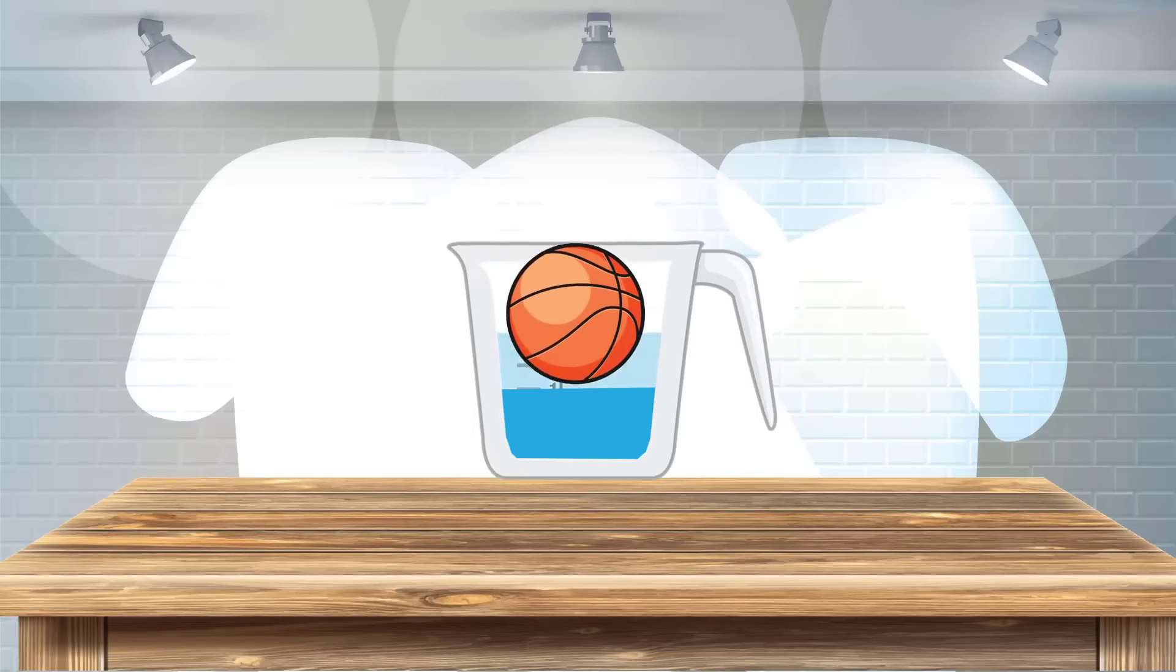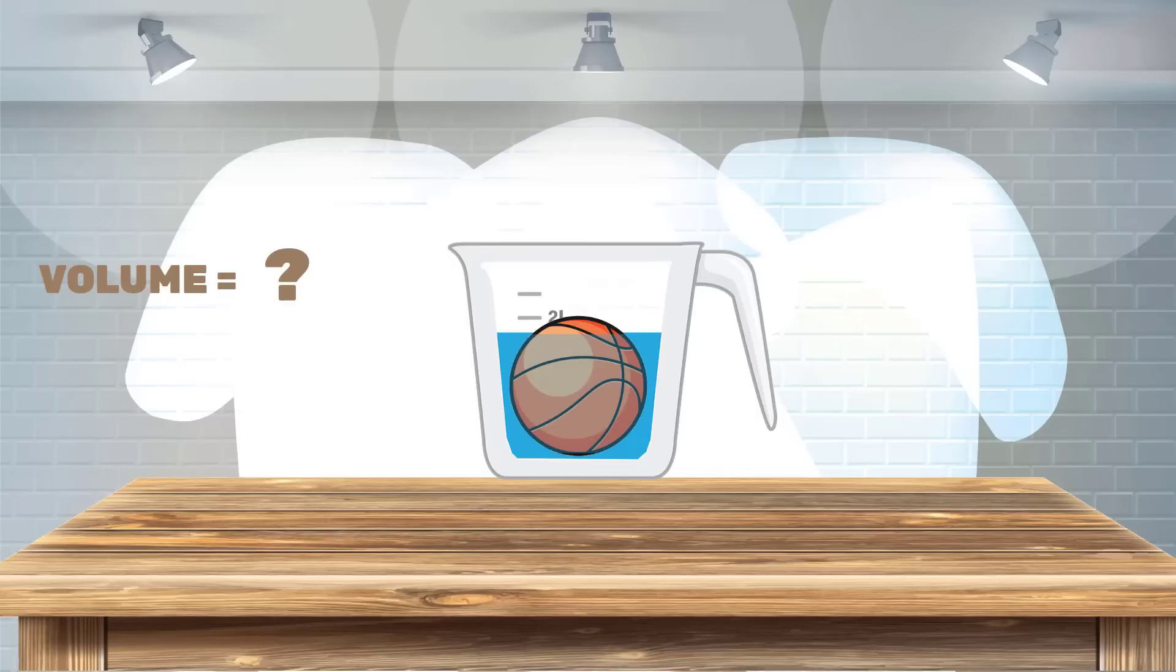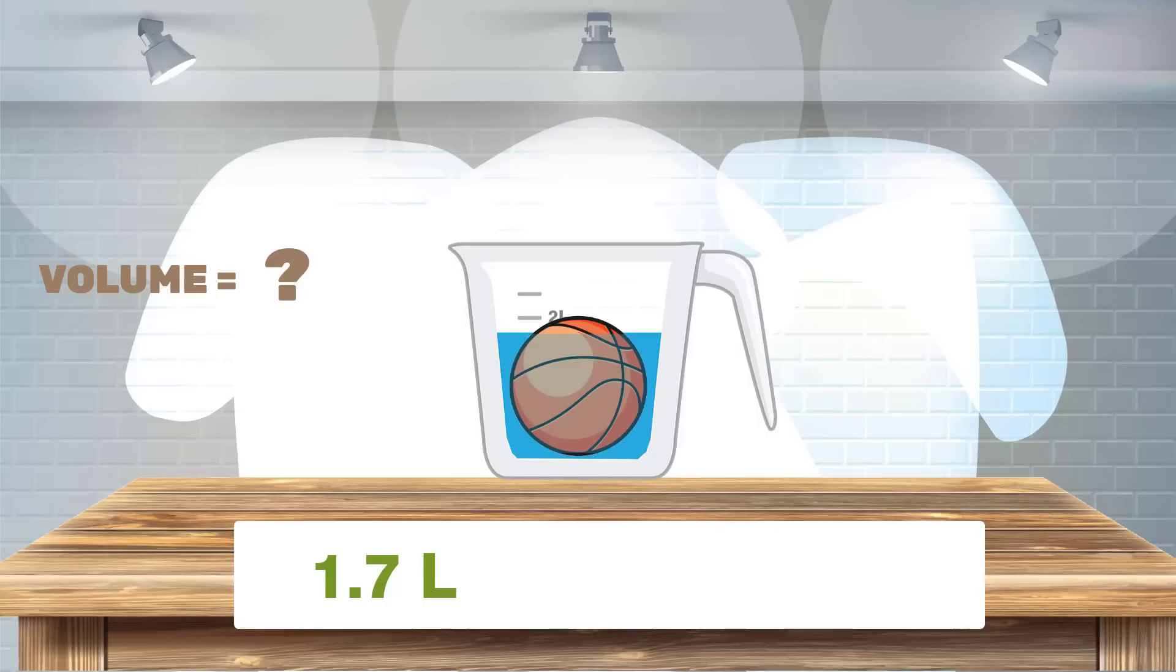In my case, a ball. You will see that the ball will make the water rise. So the volume of the ball will be the difference between the measure of the water with the ball minus the measure of the water without the ball. So the volume of the ball is 0.7 liters.